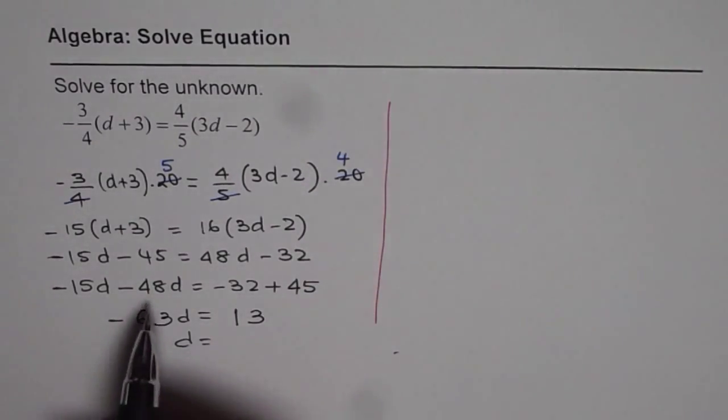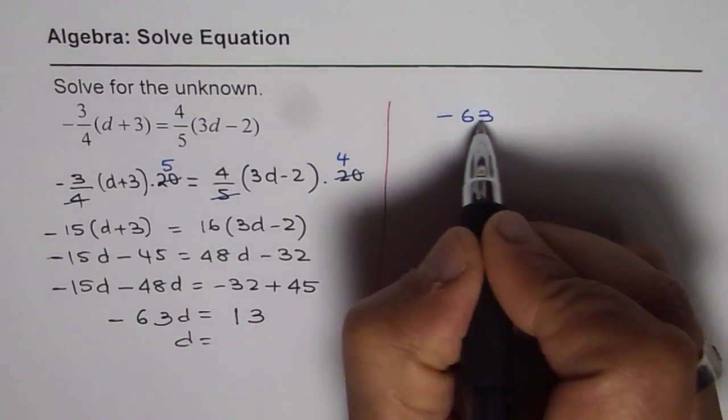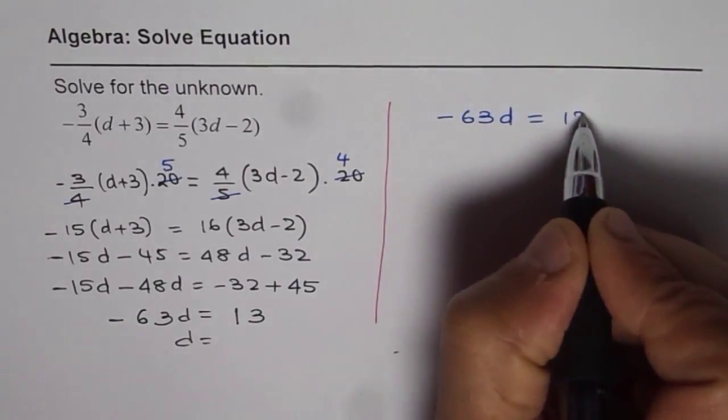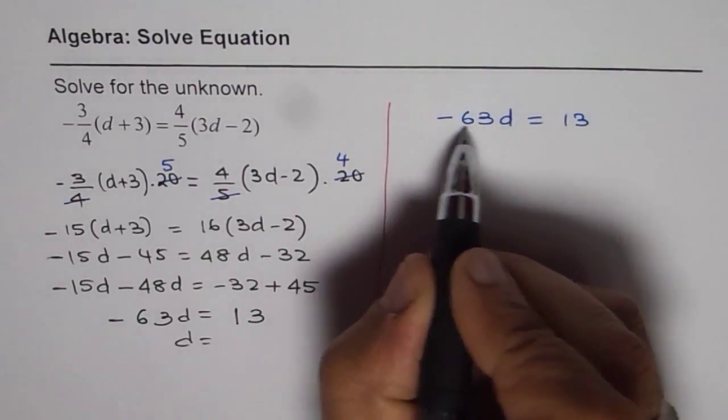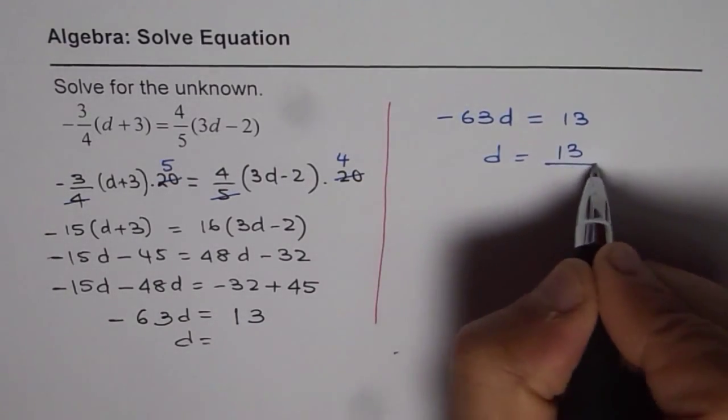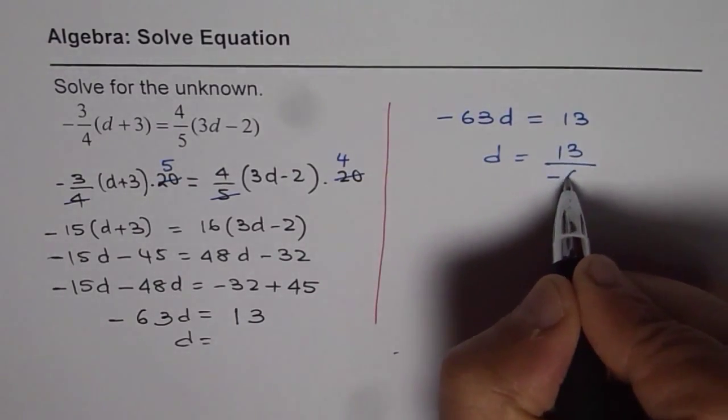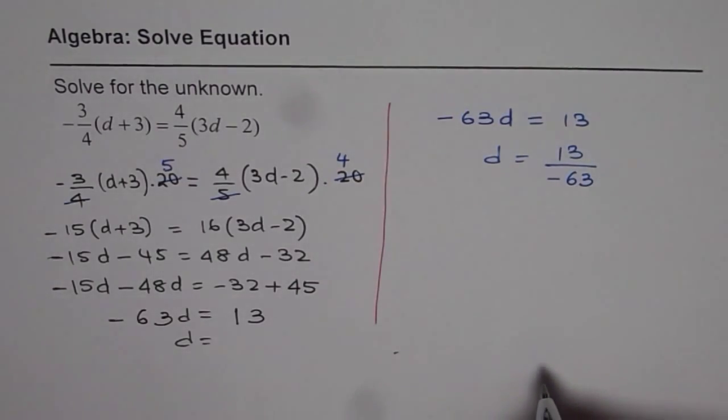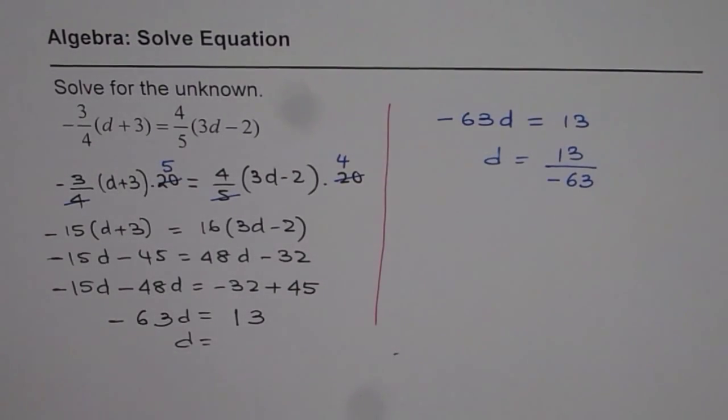After solving this, we get minus 63d equals 13. We'll divide by minus 63 on both sides, giving us d equals 13 divided by minus 63. That is our solution.